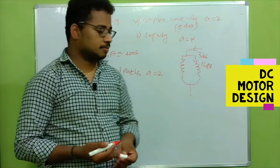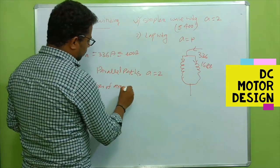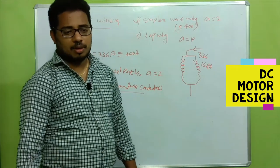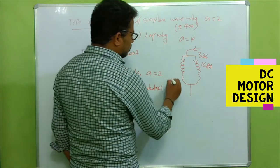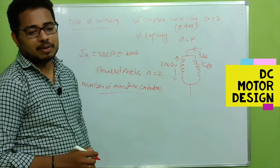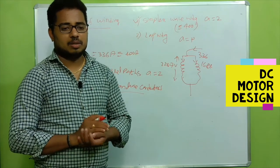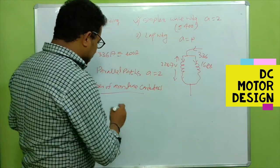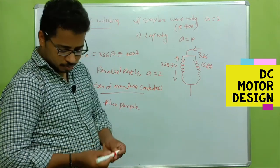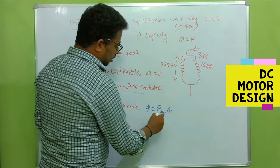Now, how to calculate the number of armature conductors. Before calculating the number of armature conductors, we already calculated the voltage generated in the armature. For generating the total voltage of 228.7 volts across the armature, we need to determine how many conductors are required. We'll use the basic formula. First, let's calculate the flux per pole.